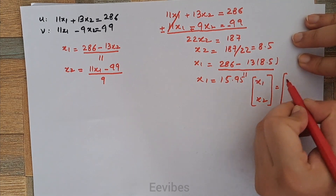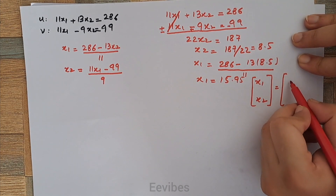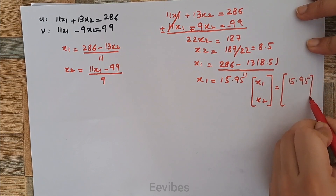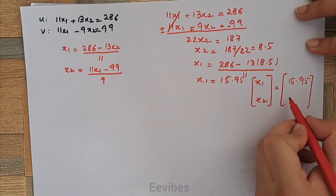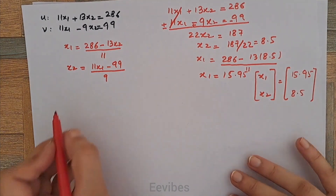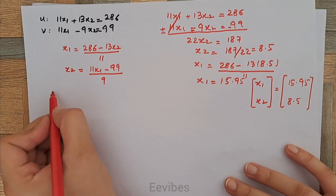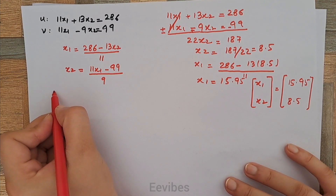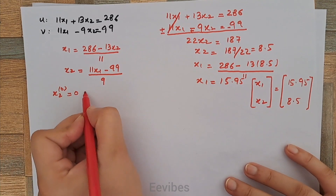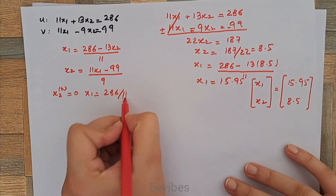So the actual solution is x1 equal to 15.95 and x2 equal to 8.5. Now let's apply the Gauss-Seidel method. In the first iteration, as it is an iterative method, we choose an initial guess. We choose x2 initially equal to 0, and from the first equation x1 will be equal to 286 divided by 11.